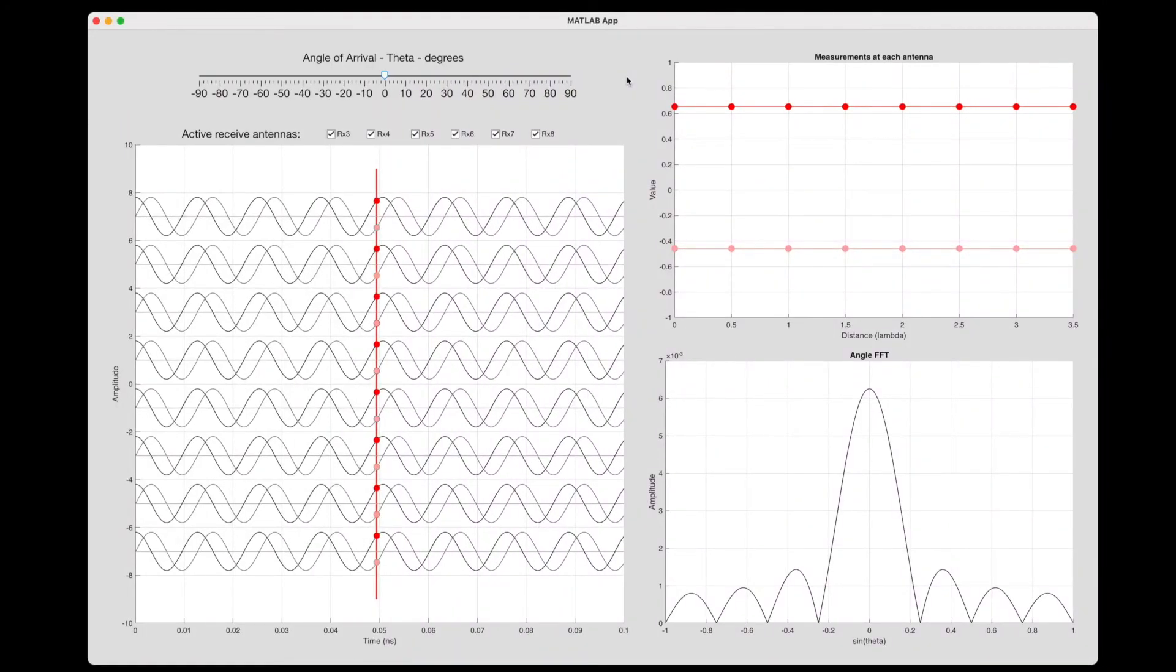Alright, in this example I'm using an array of eight receive antennas. And this plot shows the IQ signals from each of them, where the first line is the first antenna, the second, and the third, and so on. And this red line indicates the IQ values that each antenna is seeing at the moment.